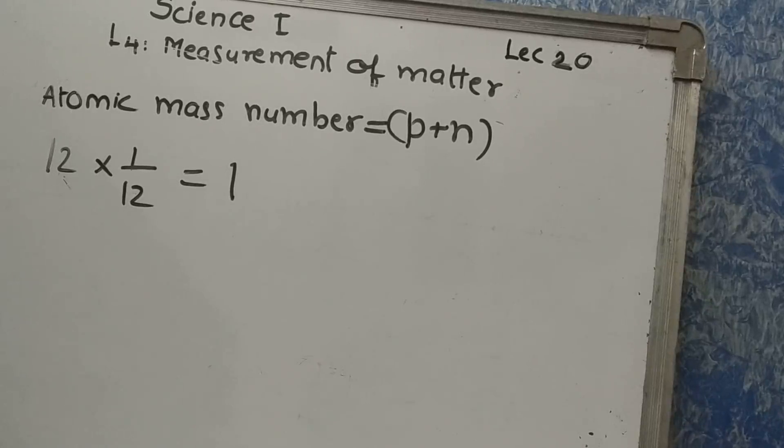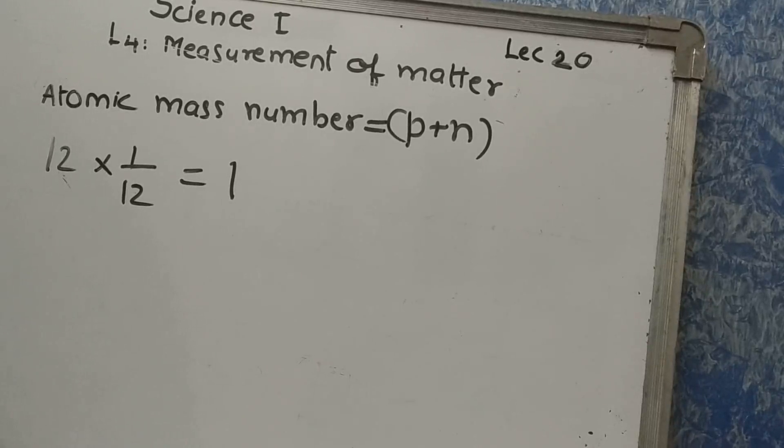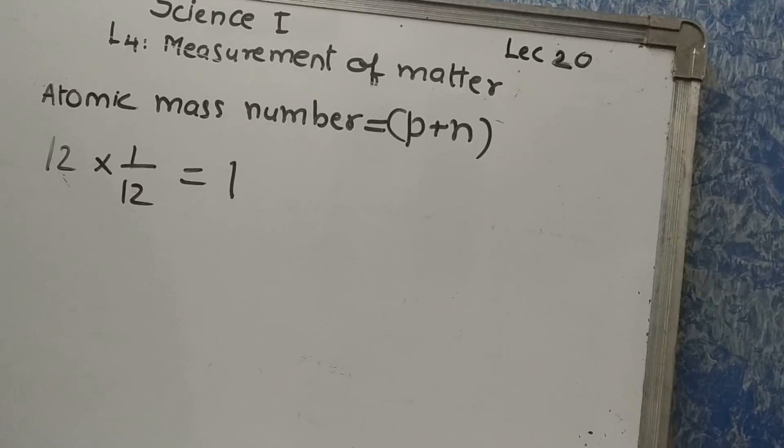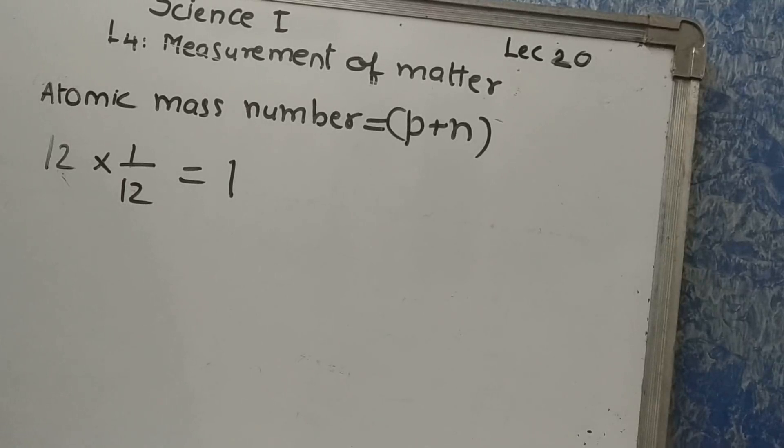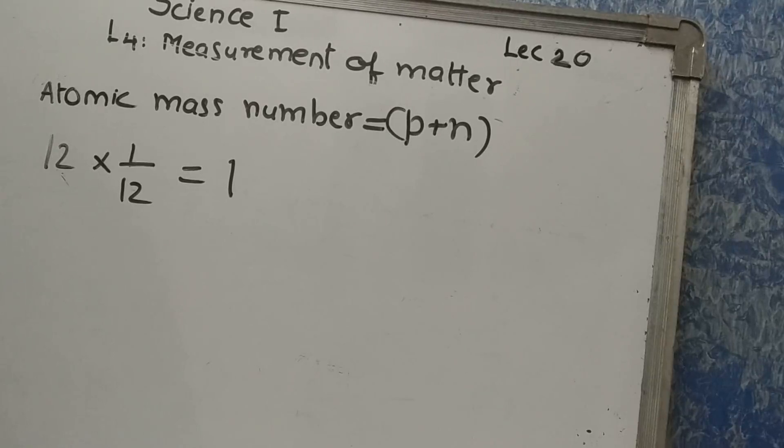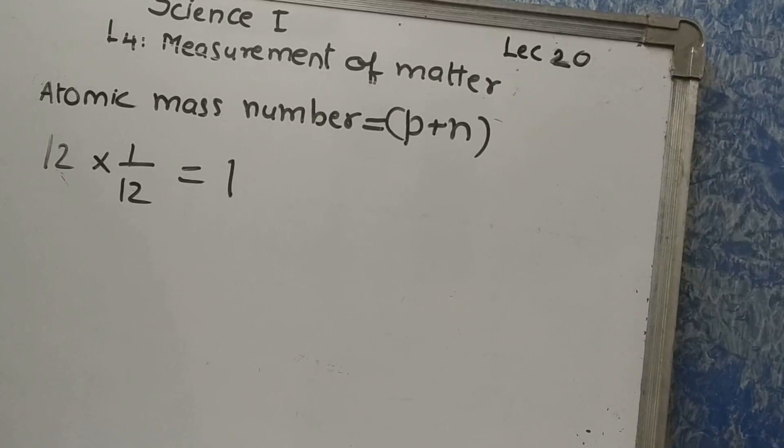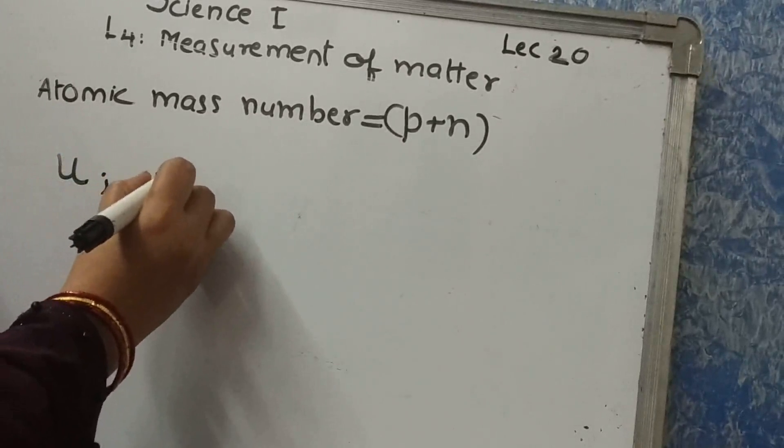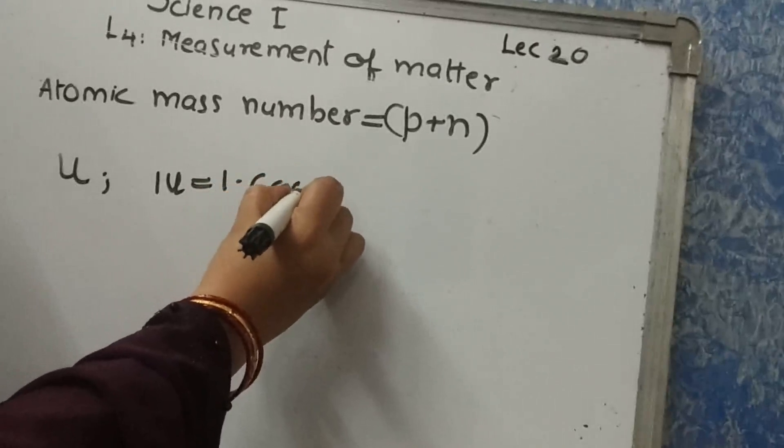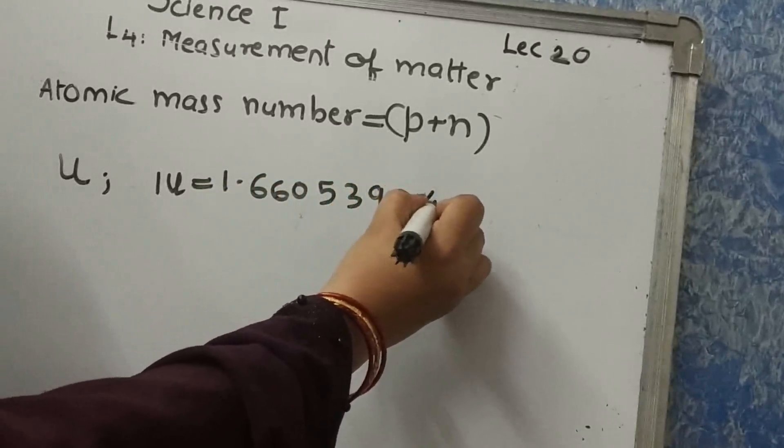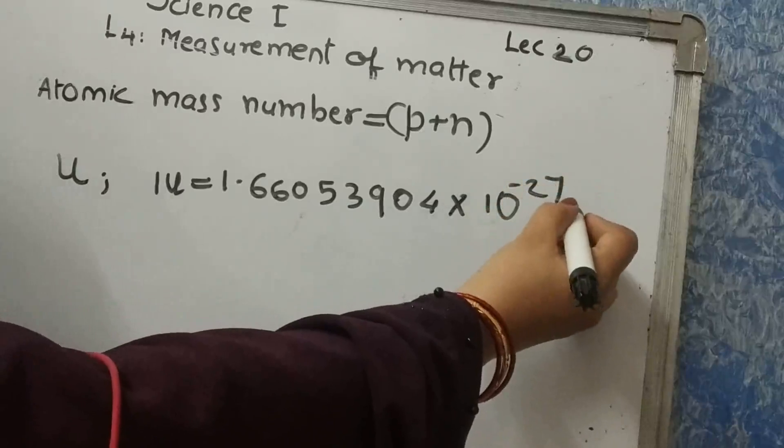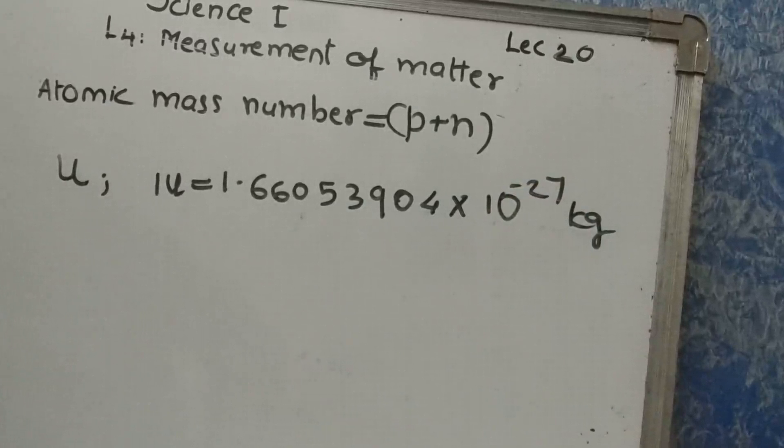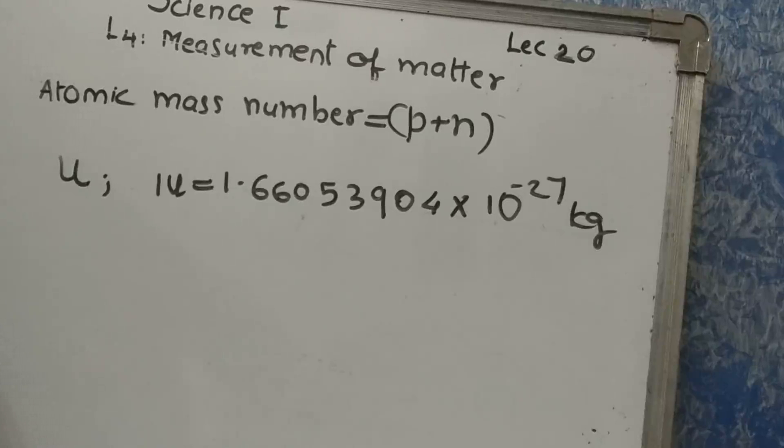Now the next term is unified mass. Unified mass is a highly accurate method for measuring the mass of an atom directly. Instead of relative mass, unified mass has now been accepted as the unit of atomic mass and its symbol is u. 1u is equal to 1.66053904 multiplied by 10 to the power minus 27 kg.